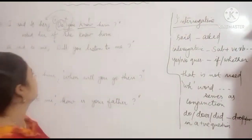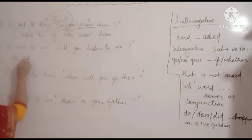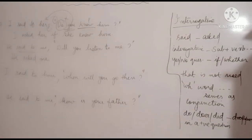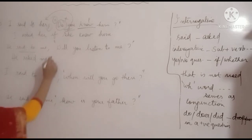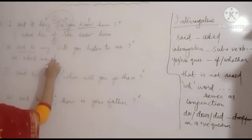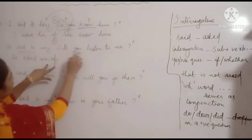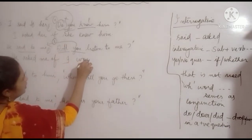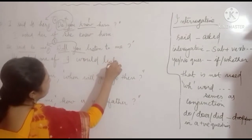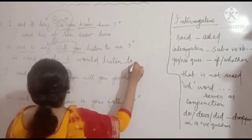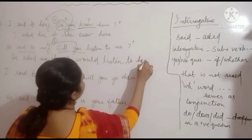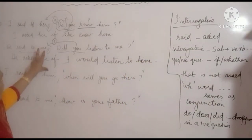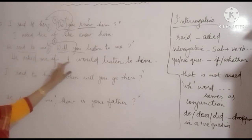Interrogative example 6: 'He said to me, will you listen to me?' 'Said to' becomes 'asked'. Yes/no question — use 'if'. We write: He asked me if. 'You' changes according to object 'me', so 'I'. 'Will' changes to 'would'. Answer: He asked me if I would listen to him.